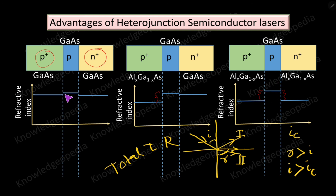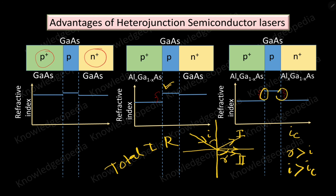In the homojunction case, all regions have almost the same refractive index, so light can diffuse out of the active region easily. In the single heterojunction, one side has a significant difference in refractive index — the active region is the denser medium and the aluminum gallium arsenide is the rarer medium — so total internal reflection occurs at that junction, reducing cavity loss on that side. In the double heterojunction, total internal reflection occurs on both sides of the active region, so light is fully confined within the active region.